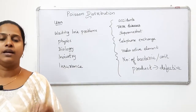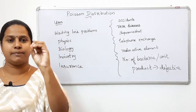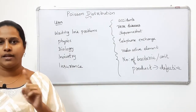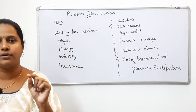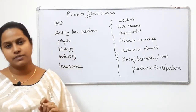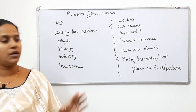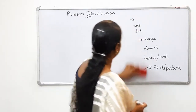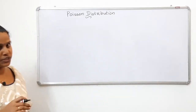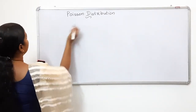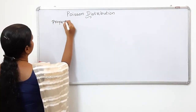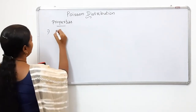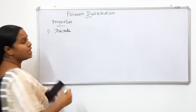If we have a problem or an event, we will check the Poisson conditions: number of trials tending to infinity, probability of success tending to zero, and Np finite. If you hold that situation, we will check the Poisson properties. It is a discrete distribution.